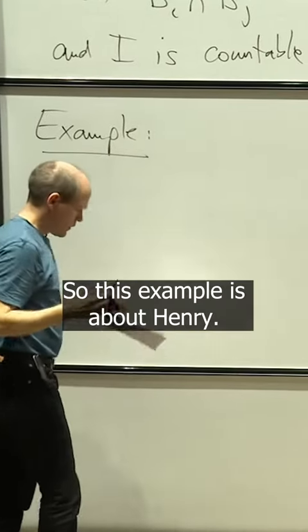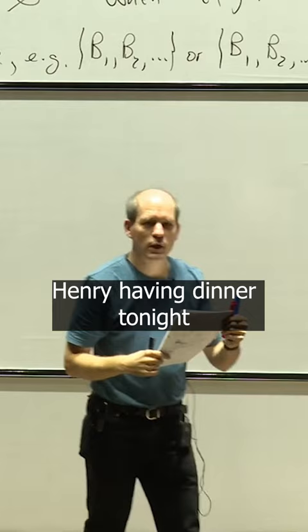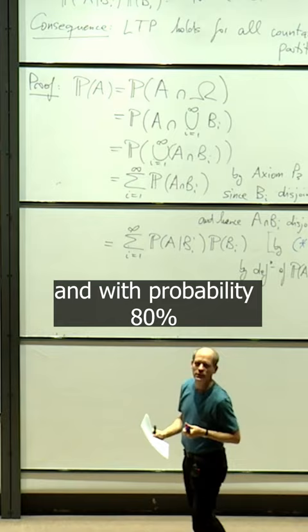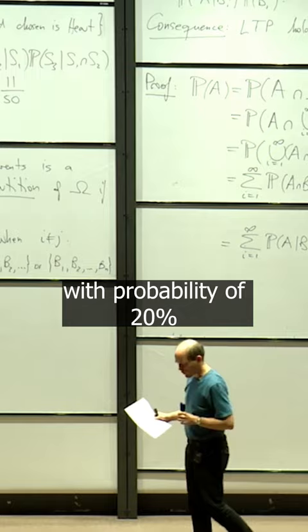This example is about Henry having dinner tonight. With probability 80%, Henry is having the dinner provided by college, and with probability 20% Henry is cooking for himself.